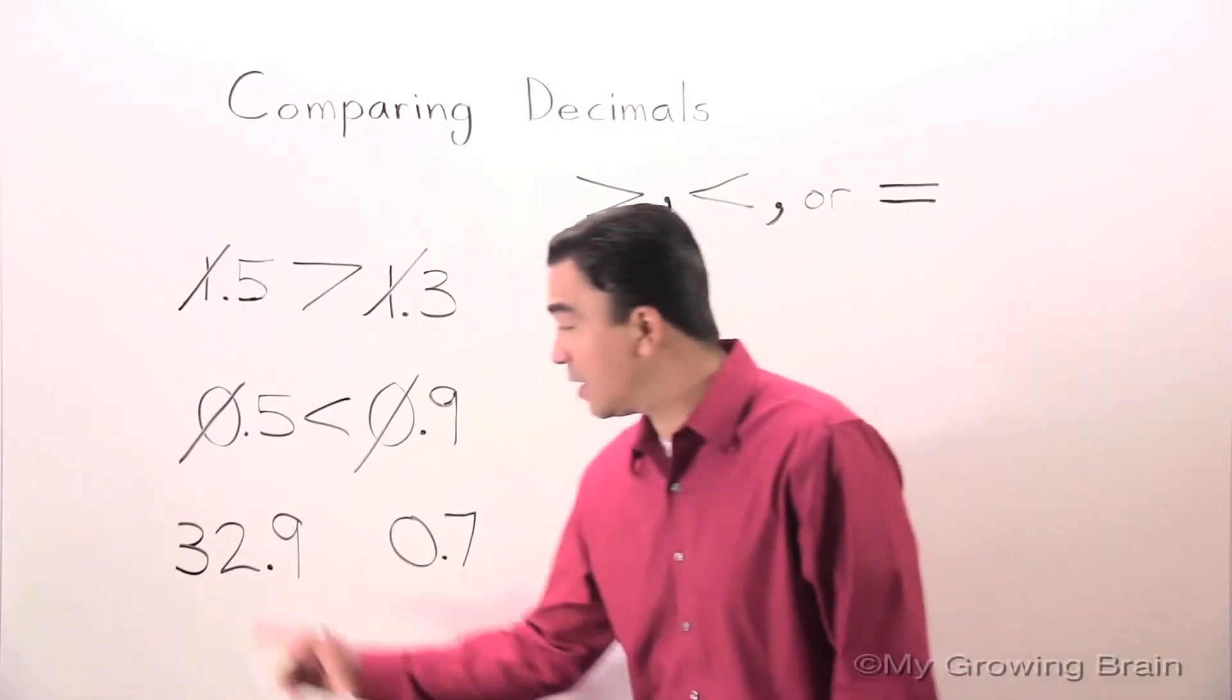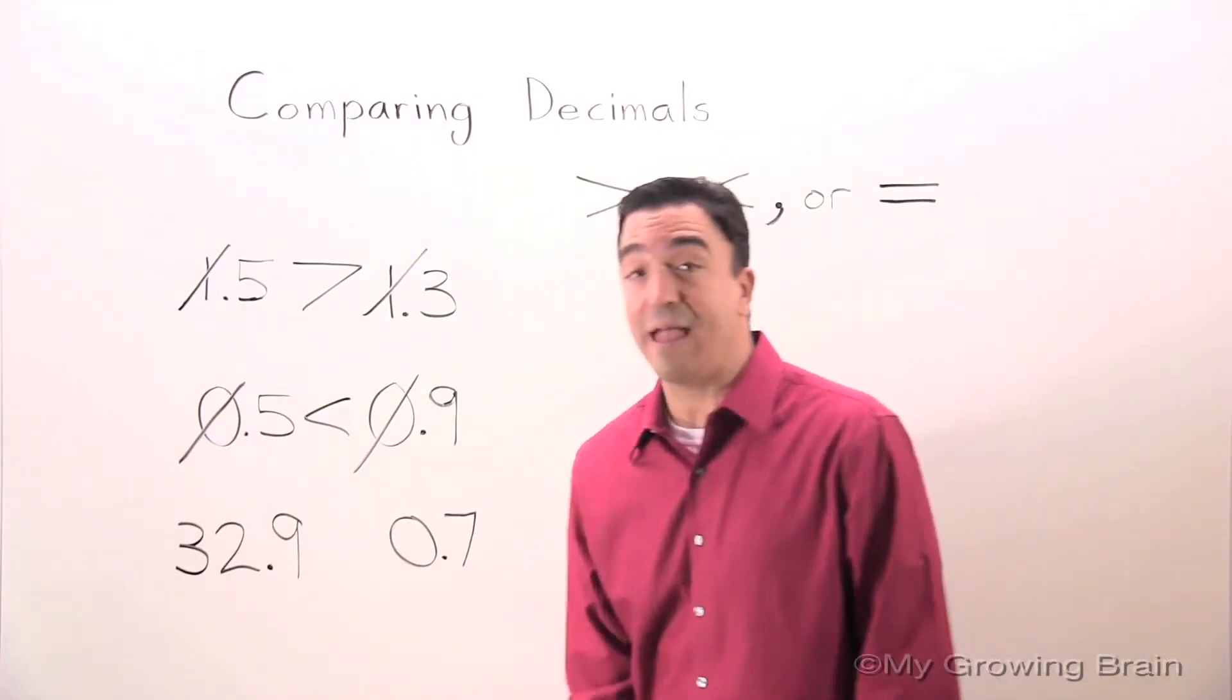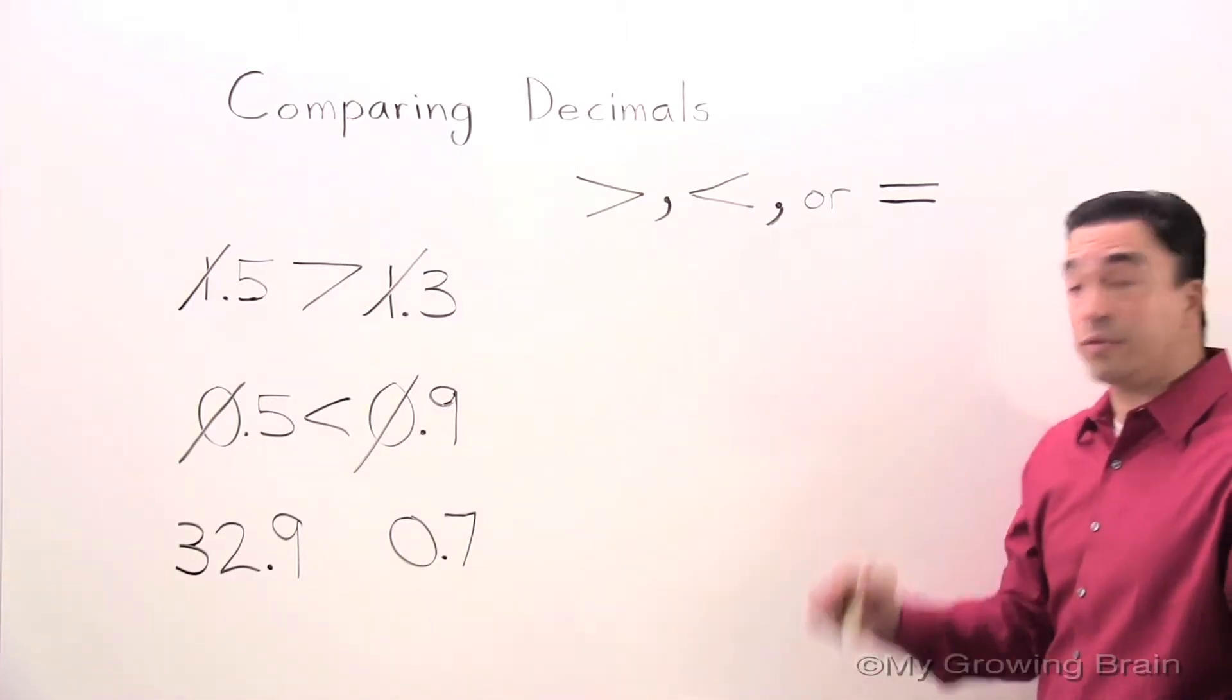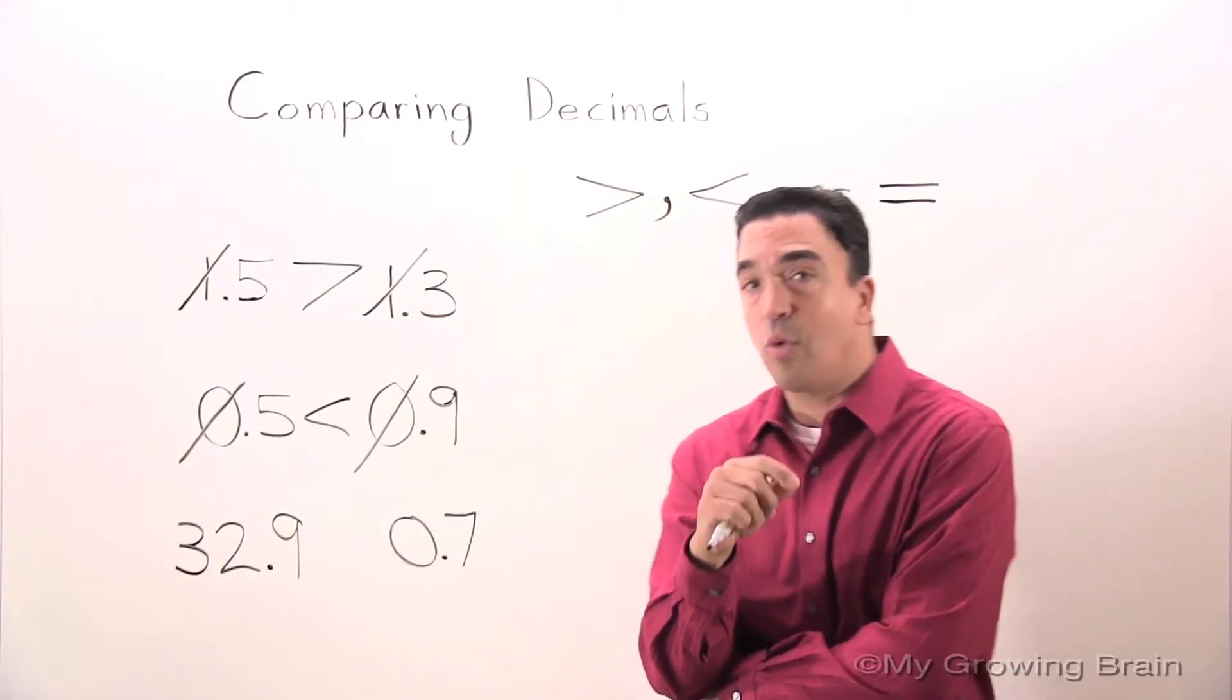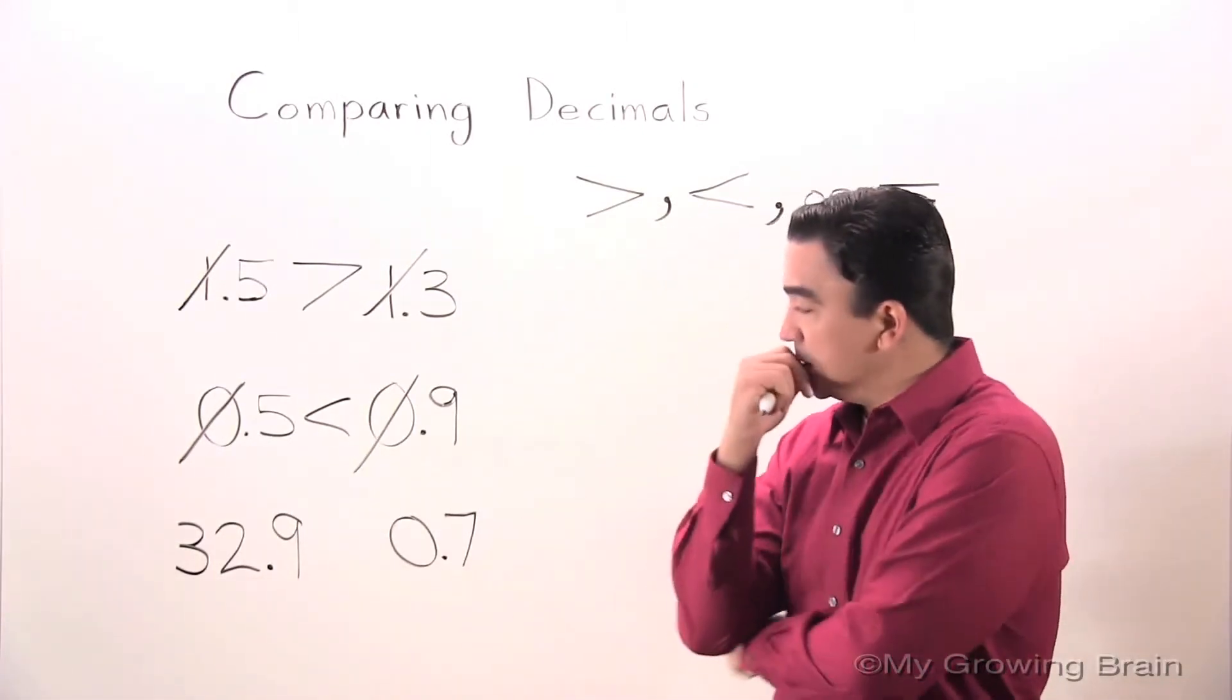Is 32 and 9 tenths greater than, less than, or equal to 7 tenths? I notice one big difference between this decimal and this decimal.